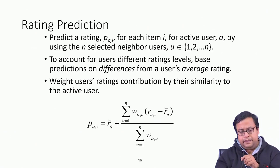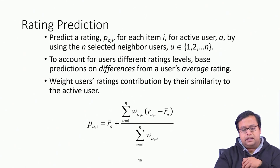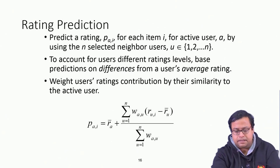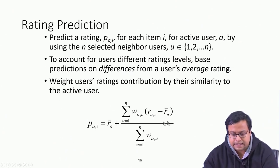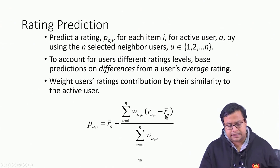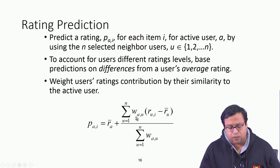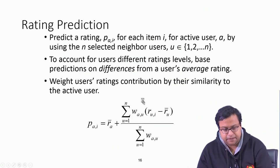For rating prediction, the predicted rating for active user A on an item is RA plus the weighted sum of each neighbor's deviation from their average rating, multiplied by their weight WAU, divided by the sum of weights. This is the standard formula used for rating prediction in collaborative filtering.